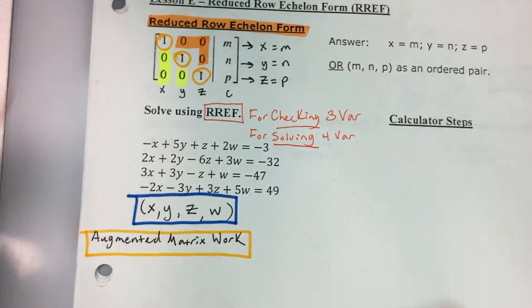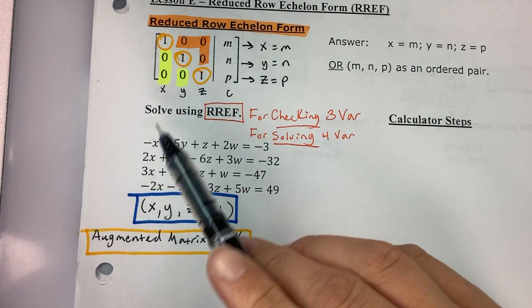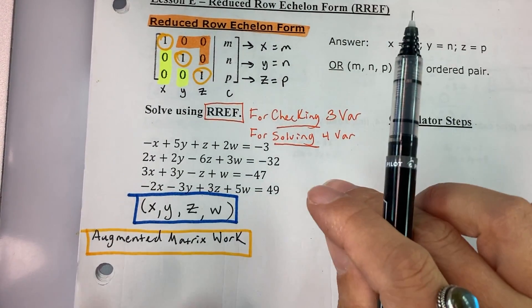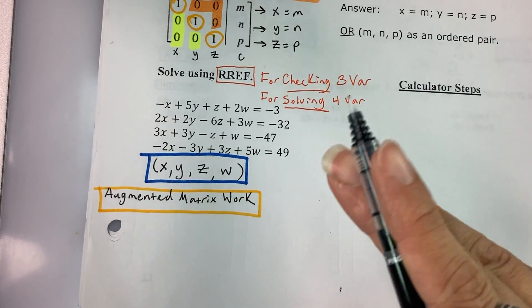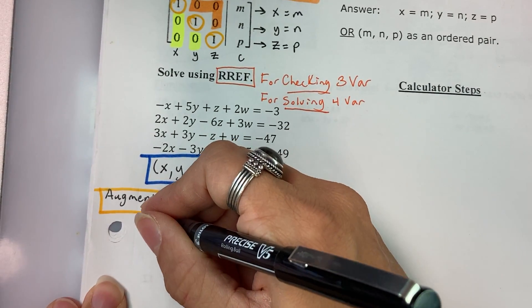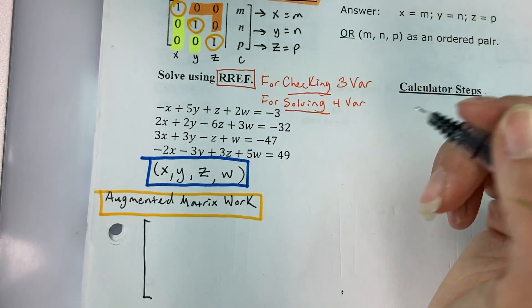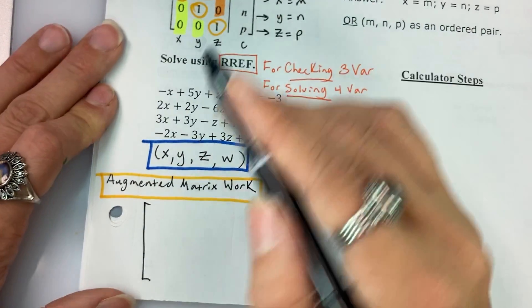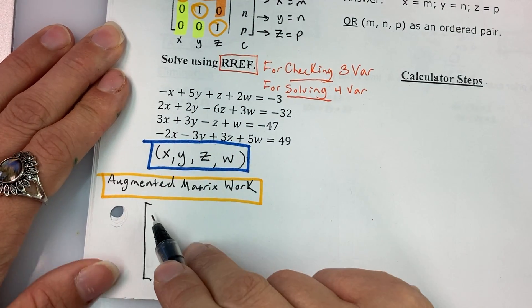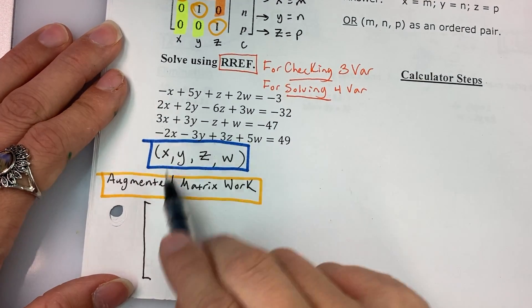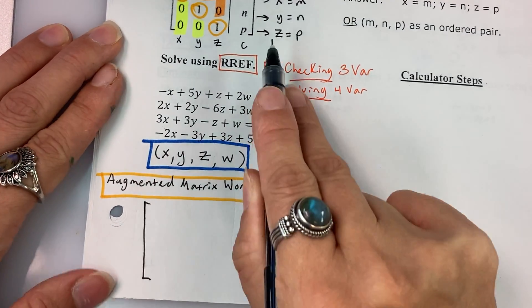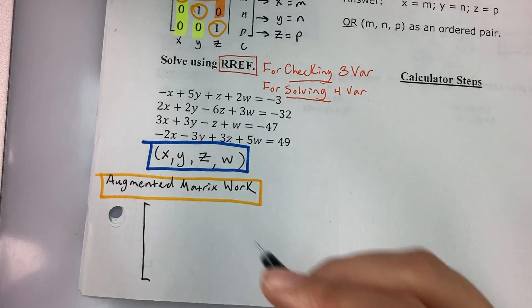So when we go to turn this into an augmented matrix, normally we would try to get a one in that top left position, but since our calculator is going to do the heavy lifting on this one, we're going to go ahead and just write the equations in as is. So what will the dimensions of this matrix be? We have four equations, so there's going to be four rows, and there's one, two, three, four variables, and a constant, so there will be five columns.